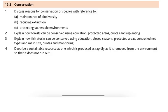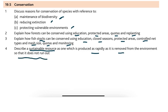For 19.5, we will discuss reasons for conservation of species with reference to maintenance of biodiversity, reducing extinction, and protecting vulnerable environments. We will explain how forests can be conserved using education, protected areas, quotas, and replanting. We will explain how fish stocks can be conserved using education, closed seasons, protected areas, controlled net types and mesh size, quotas, and monitoring. A sustainable resource is one which is produced as rapidly as it is removed from the environment so it does not run out.